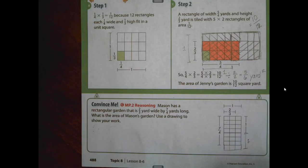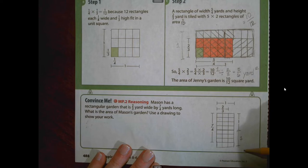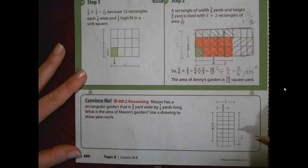Let's look at the convince me. Mason has a rectangular garden that is two-thirds yard wide by seven-fourths yards long. What is the area of Mason's garden? And use the drawing to show your work. Boys and girls, one thing that I did was I actually extended this drawing. Let me explain why.